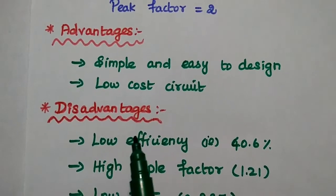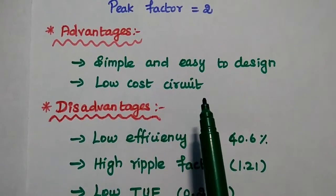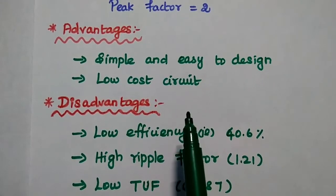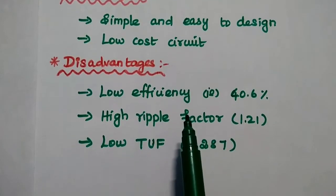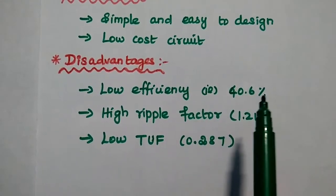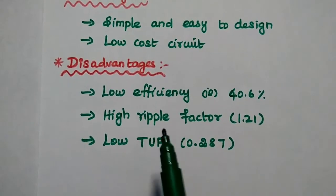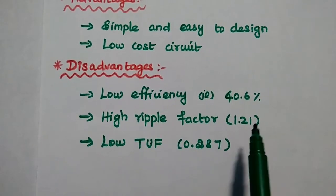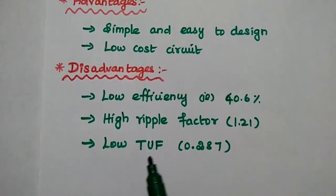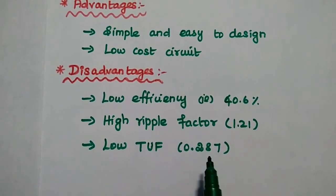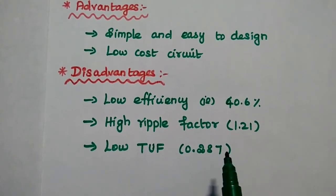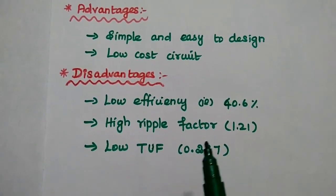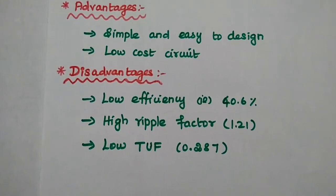The advantages of the half-wave rectifier are that it is very simple and easy to design, and it is a low-cost circuit because only one diode is used. The disadvantages are: its efficiency is very low at only 40.6%; the ripple factor is very high at 121%, so it is not practically used in many applications; and it has a very low transformer utilization factor of only 28.7%. These are the major disadvantages, which is why we move on to the full-wave rectifier.